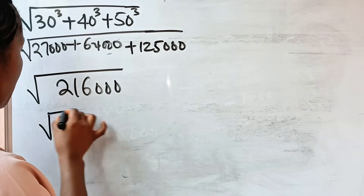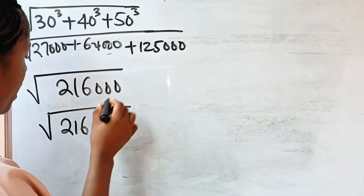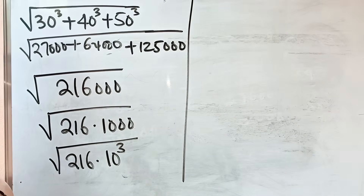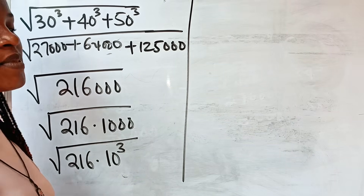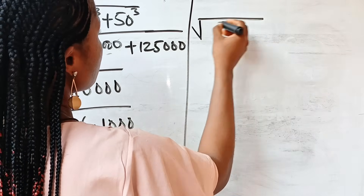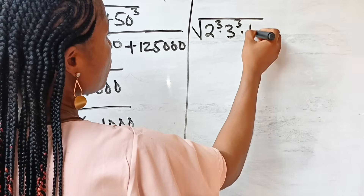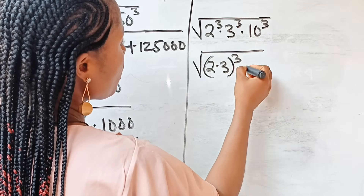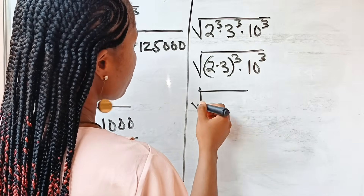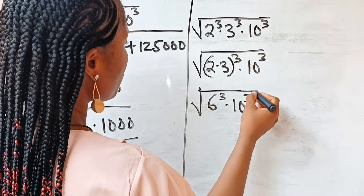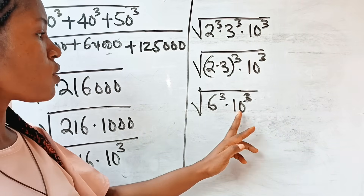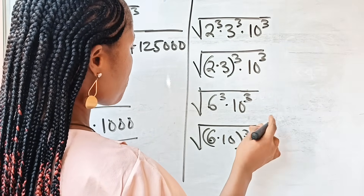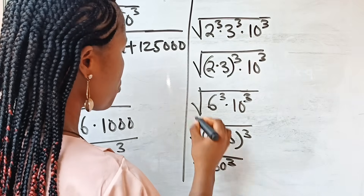Now let us simplify this further. This can be written as 216 multiplied by 1000, which is 216 multiplied by 10 to the power of 3. And 216, as we expressed before, is the same as 2 to the power of 3 multiplied by 3 to the power of 3. So we have the square root of 2 to the power of 3 multiplied by 3 to the power of 3 multiplied by 10 to the power of 3. This gives us the square root of 6 to the power of 3 multiplied by 10 to the power of 3, which is the square root of 60 to the power of 3.